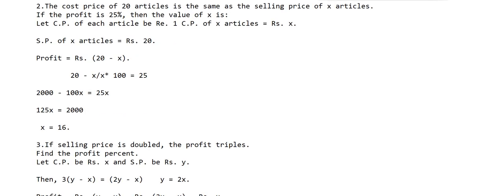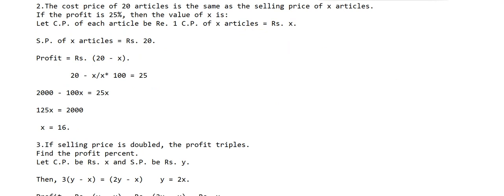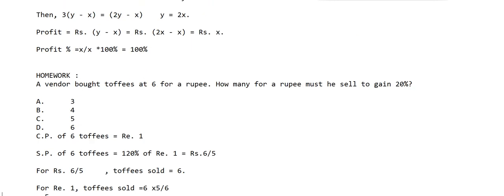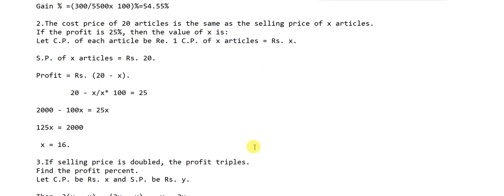Second question: the cost price of 20 articles is the same as the selling price of x articles. If the profit is 25 percent, find the value of x. We assume the cost price of each article is ₹1. So CP of 20 articles = ₹20, and CP of x articles = ₹x. The SP of x articles = ₹20, as given in the question.